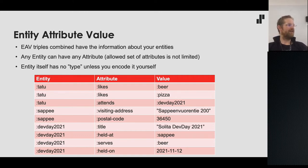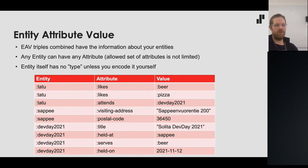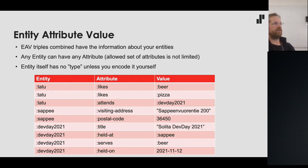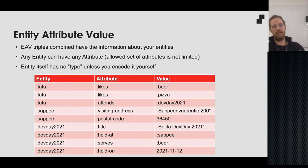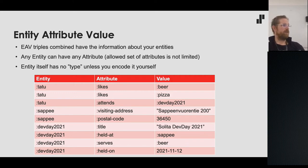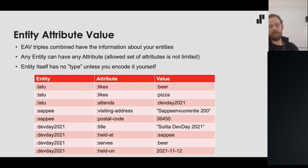Here we have some entities like Tatu, Sappe, and Dev Day, identified by keywords. There's something like 'Tatu likes beer' and 'Tatu is attending Dev Day.' Sappe has a visiting address and postal code. The Dev Day event itself has attributes like title, held-at, and serves. Based on this simple schema we can ask questions like: where is beer served, who likes what, what events are held and where, and on what dates can Tatu get some beer?